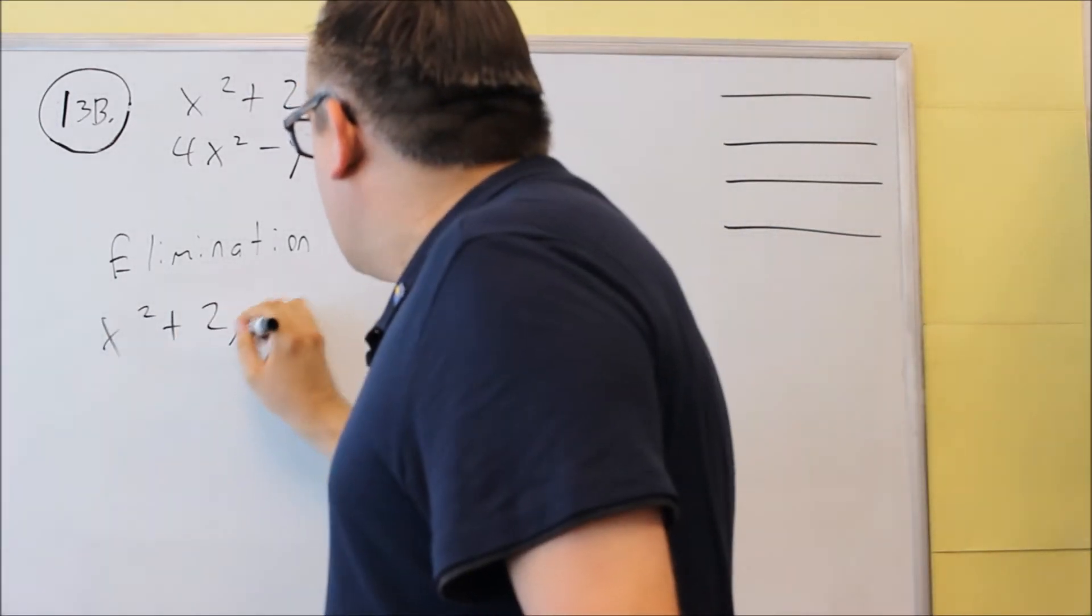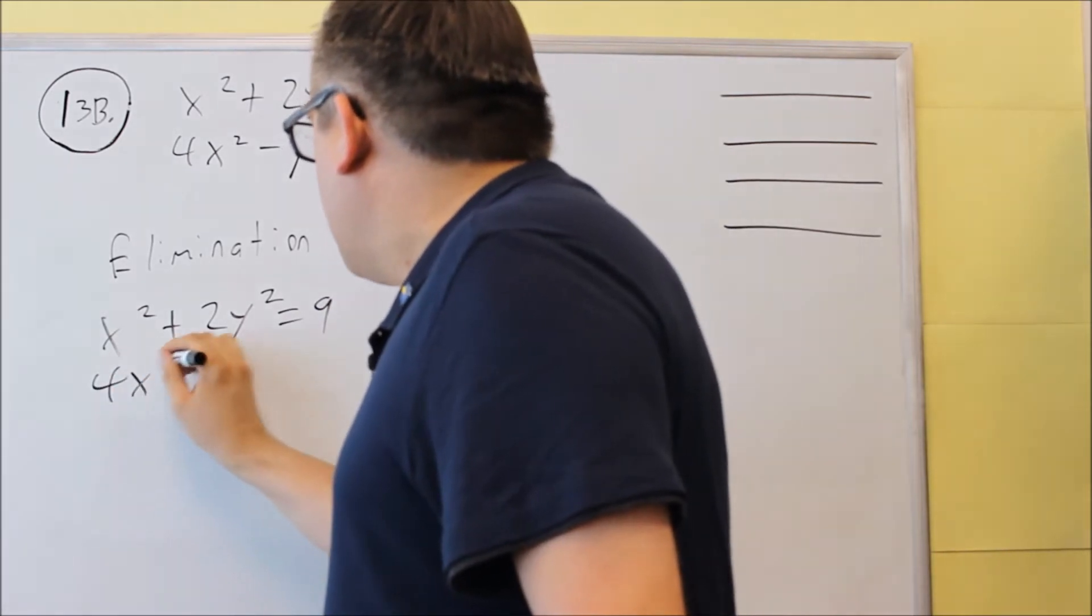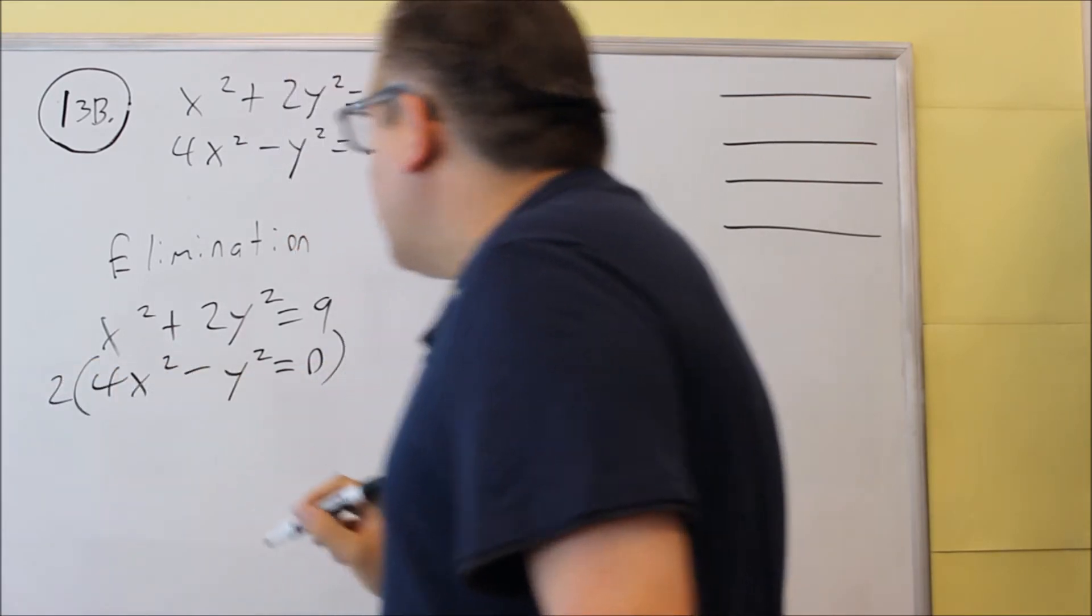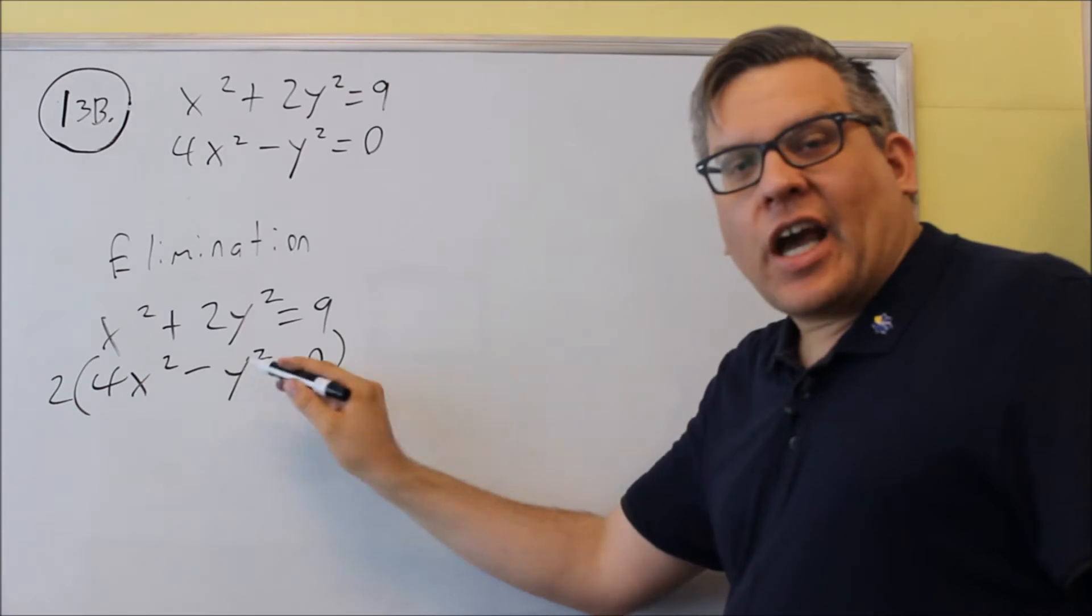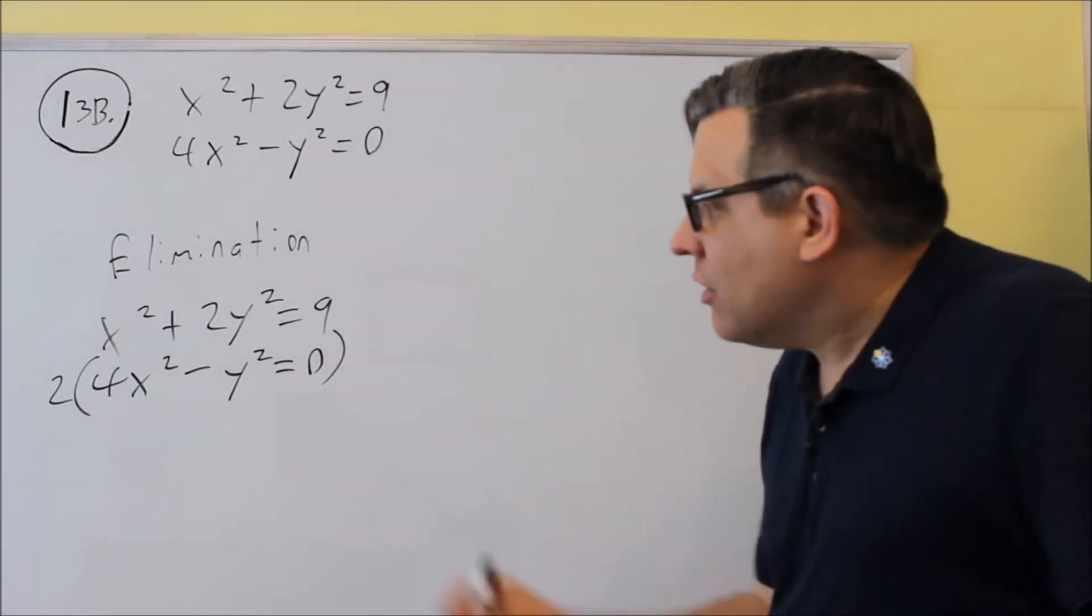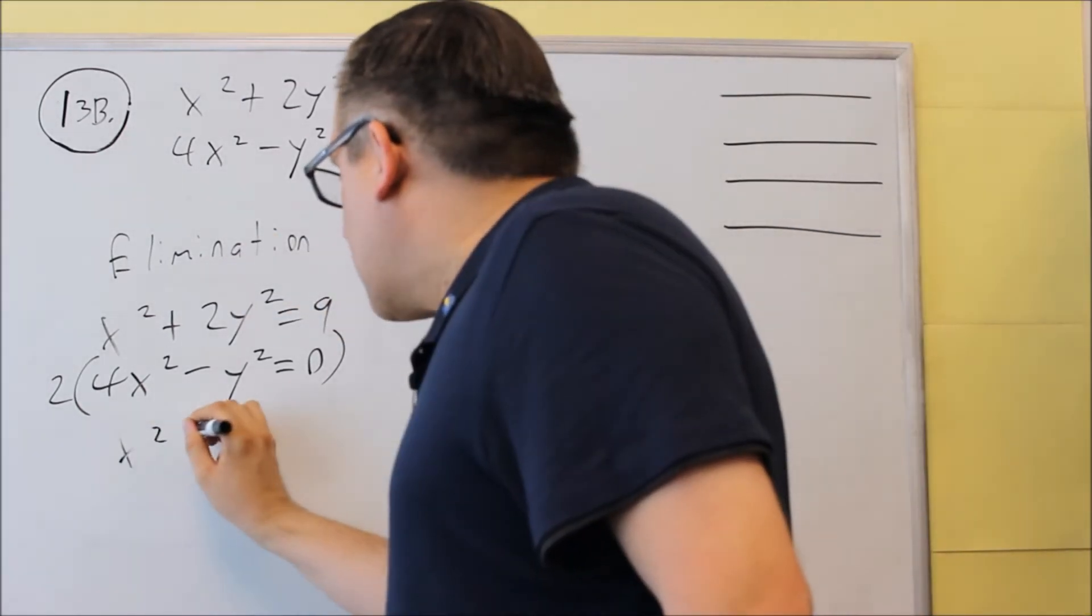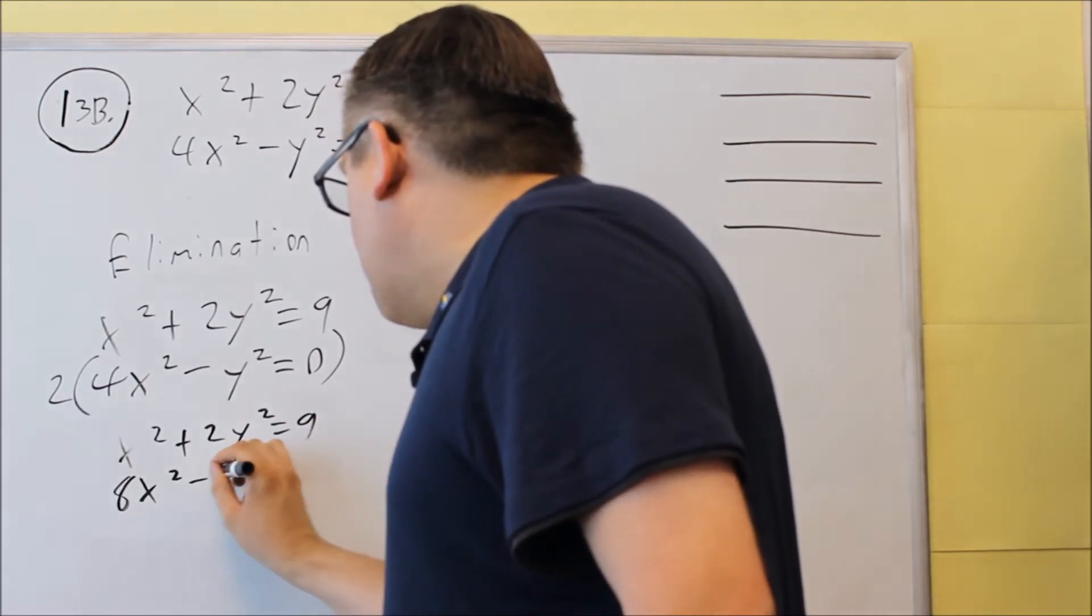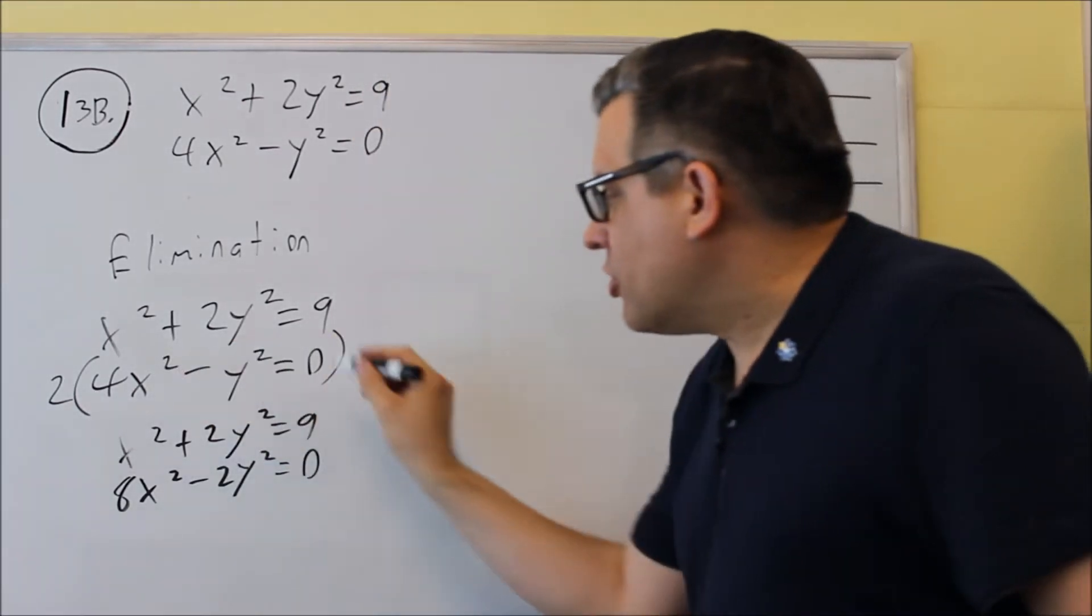So I have x squared plus 2y squared equals nine. Now the bottom equation, I'm going to multiply that whole equation by two. By doing that, we're going to get negative 2y squared here added to positive 2y squared. That'll cancel it out and you'll get just x squared left over. So when I do that, I get x squared plus 2y squared equals nine and I get 8x squared minus 2y squared equals zero. Two times zero is zero.